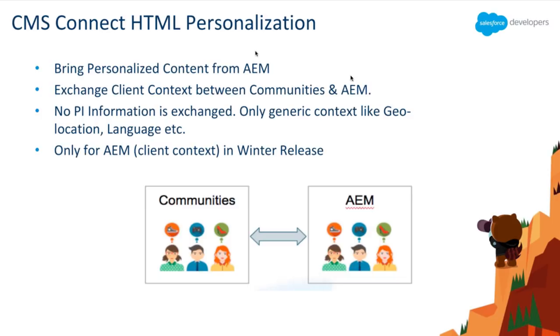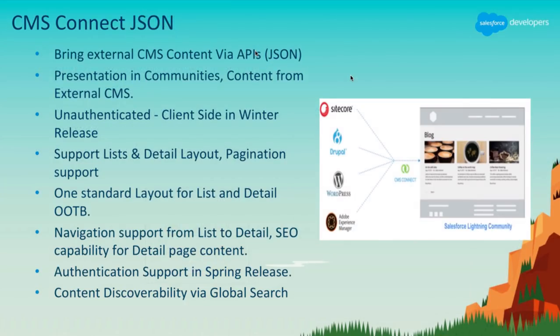In addition to the HTML connector, we also support rendering personalized content from Adobe Experience Manager by exchanging client context between communities and AEM. Coming to CMS Connect JSON Connector, it provides a way of bringing external CMS content data — like blogs, articles, files, and news — into communities using a JSON API, and we provide presentation capabilities for building the UI. The architecture consists of pre-built layouts, and JSON data is retrieved through a client-side XHR data provider for public content, bound to layout using a JSON data binder, and rendered in communities. For authenticated content, the call-out to the external system is made through a server-side proxy.